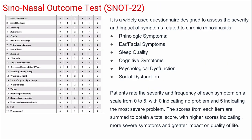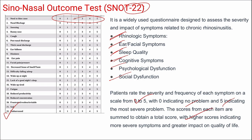Next is the Sinonasal Outcome Test (SNOT-22), a 22-item questionnaire grouped under domains of rhinological symptoms, ear or facial symptoms, sleep quality, cognitive symptoms, psychological dysfunction, and social dysfunction. All items are categorized on a Likert scale from 0 to 5, with 0 indicating no problem and 5 indicating the most severe problem. Scores are summed, and higher total scores indicate more severe symptoms and greater impact on quality of life.